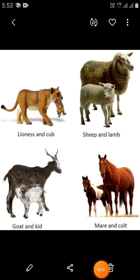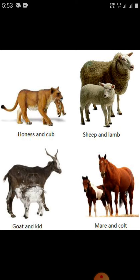Here are some examples of viviparous animals — animals that give birth to young ones. Lions give birth to cubs. Sheep give birth to lambs. Goats give birth to kids, and mares give birth to colts.